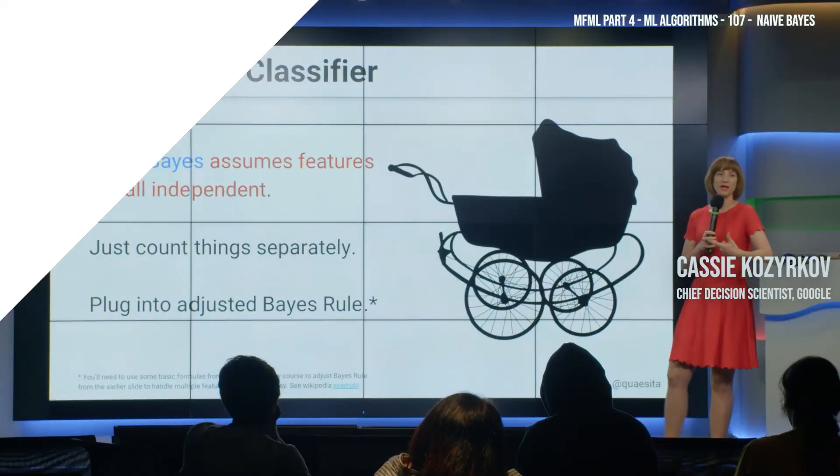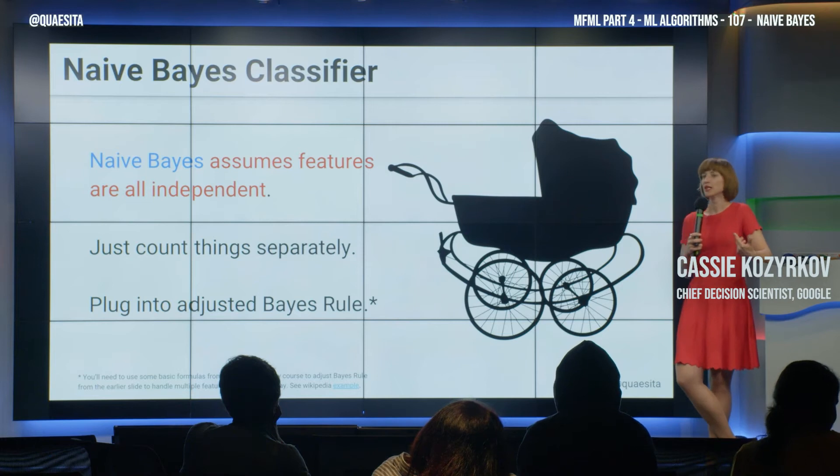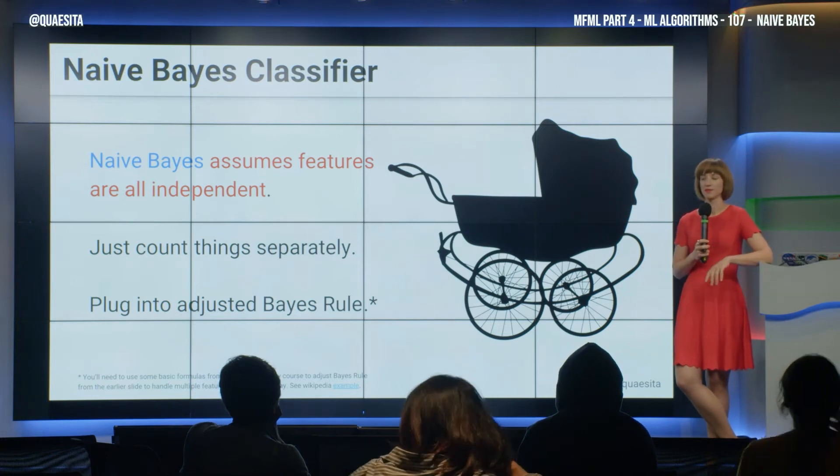Naive Bayes tends to be baby's first spam classifier — the favorite example in machine learning courses. It's naive in the sense that it says my features have nothing to do with any of my other features. The presence of the word 'free' has nothing to do with the presence of the word 'shipping.' Now that's a little naive. We know that there might be some relationship between those words, and if we were trying to model the universe carefully, this would probably be a bad fit.